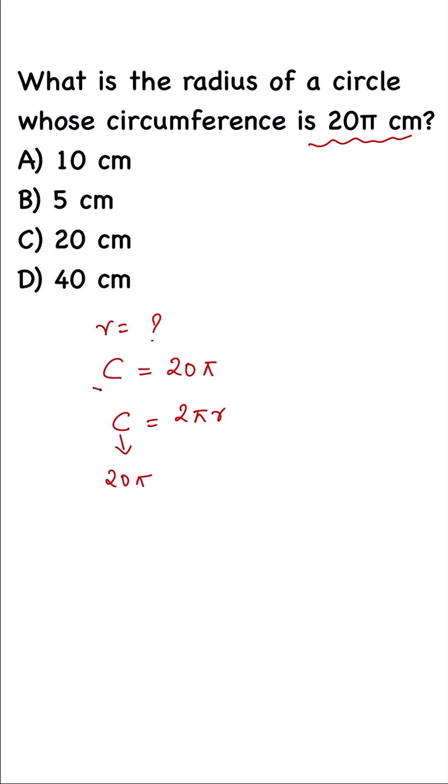20π = 2πr. Now we have π on both sides, we can cancel it. And we have 2 and 20, we can cancel, or we can just transpose and cancel it.